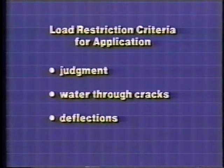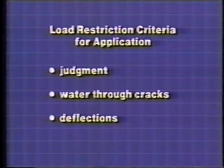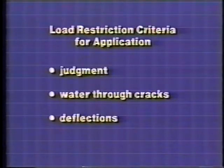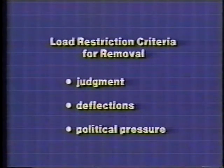The basis for starting a load restriction varies from judging the presence of water coming through cracks and joints to the use of deflection measurements. The majority of agencies rely on the judgment and experience of field personnel. Maintenance personnel look for signs such as water draining from cracks in the pavement surface during the spring thaw, or water present at the beginning of the thaw period in alligator cracked areas. Load restrictions are removed based on the judgment of field personnel, deflection measurements, or when sufficient political pressure mounts.